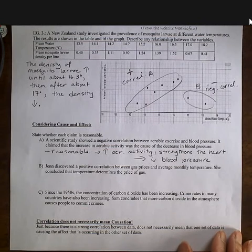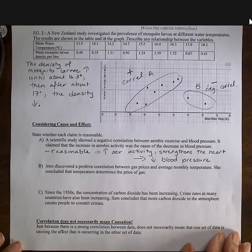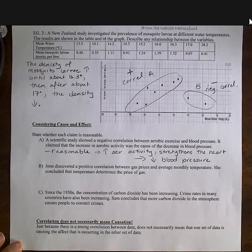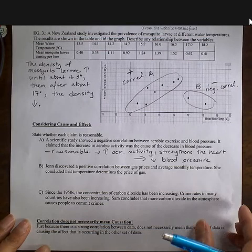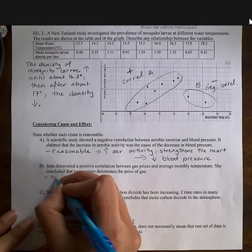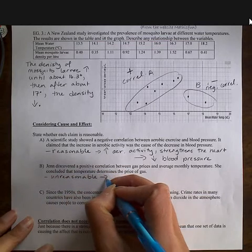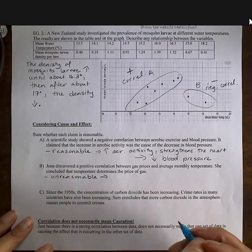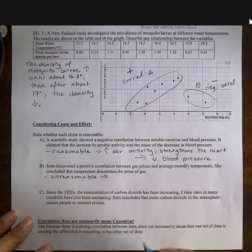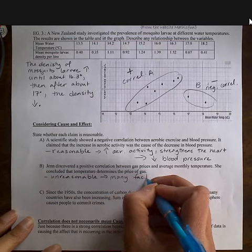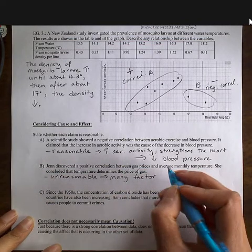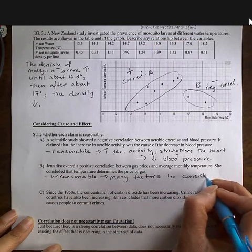And b, Jen discovered a positive correlation between gas prices and average monthly temperature. She concluded that temperature determines the price of gas. So let's think about this for a sec. So our average monthly temperature tends to get higher in the summer months. But is it the temperature which is causing the price of gas to go up? Or are there other factors that are being considered? This would be unreasonable. It's not just the temperature. It's not the temperature at all. It's other factors. So even though we do see higher gas prices often in the summer, it's because a lot of people are traveling on vacation and they feel that they would make more money probably. So there are many factors to consider with gas prices. Look at the lower gas prices now. That does not have to do with the warmer temperatures. Okay, also OPEC sets oil prices.